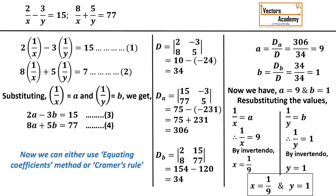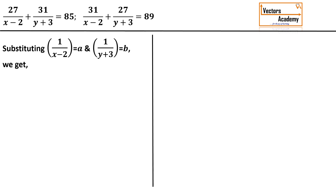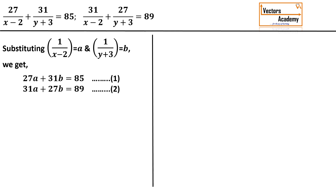So this is how we convert a nonlinear equation into a linear equation by substitution and then solve using any method we know. Now let us look at another example: 27/(x minus 2) plus 31/(y plus 3) equals 85, and the second equation 31/(x minus 2) plus 27/(y plus 3) equals 89. This time we substitute 1/(x minus 2) equal to a and 1/(y plus 3) equal to b. After substituting, the first equation becomes 27a plus 31b equal to 85 and the second becomes 31a plus 27b equal to 89.